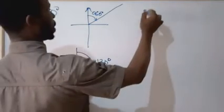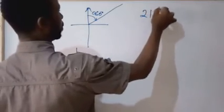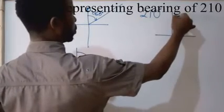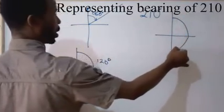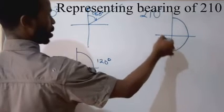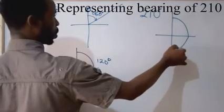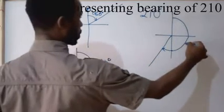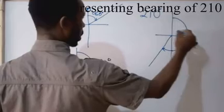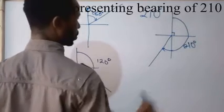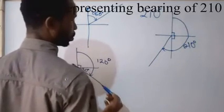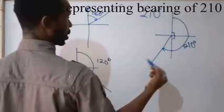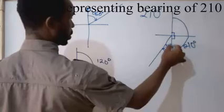If I want to represent angle 210, it will be done like this. From the north, you move past 90, another 90 — that's 180. If I get to the west position, it's 270. So I'll stop somewhere around here. The whole of this angle is 210 degrees, which you can break into 90 plus 90 — that's 180 — and what you have more to make 210 is 30. So this remaining space is 30 degrees.